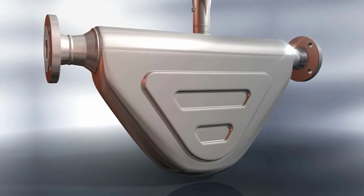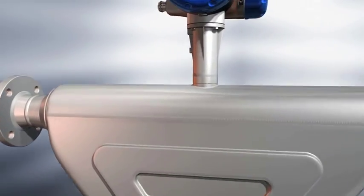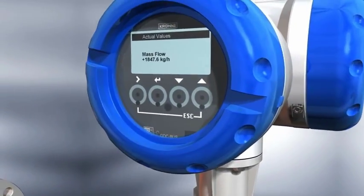The OptiMass 6400 is the perfect union between the 6000 sensor and the MFC-400 converter.